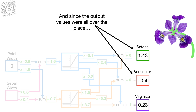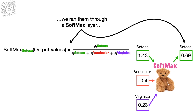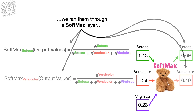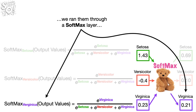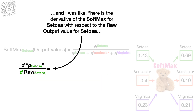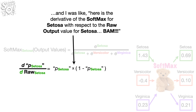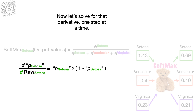In the StatQuest on Softmax, we had a fancy neural network that predicted if an iris was Setosa, Versicolor, or Virginica. Since the output values were all over the place, we ran them through a Softmax layer. Here's the derivative of the Softmax for Setosa with respect to the raw output value for Setosa — now let's solve for that derivative one step at a time.